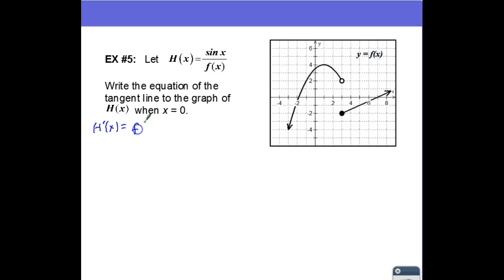So it's going to be f of x times the derivative of the top. So f of x times the derivative of sine of x would be cosine of x minus the top times the derivative of the bottom. So that's going to be sine of x times f prime of x. And then we're going to divide by f of x squared. And so put that in square brackets. And that is also a fraction.